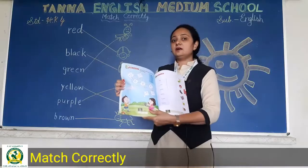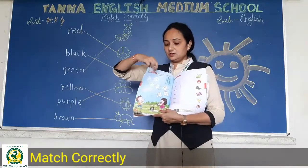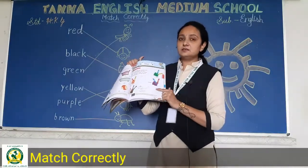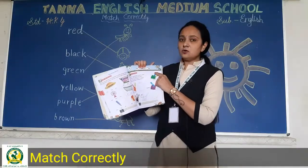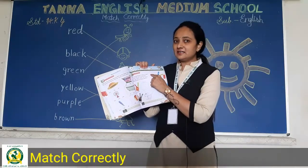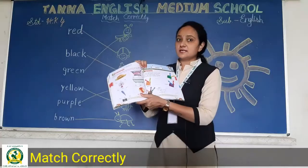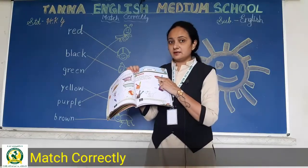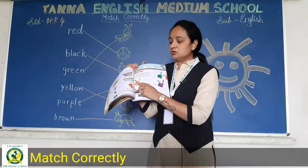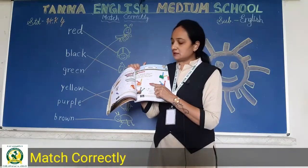Now you have to turn a page. Yaha pe match the following ke liye yeh bhi homework de diya aapko. Toh dekho — jab hum yellow aur blue color ko mix karte hai toh green color banta hai. Leaf kunsa color ka hota hai? Green. Toh aapko yaha pe green color karna hai — dark karo toh achha rahega. Jab aap red color aur yellow color mix karo ge toh orange color banega — aur yaha pe jo orange fruit hai usmein aapko orange color karna hai.